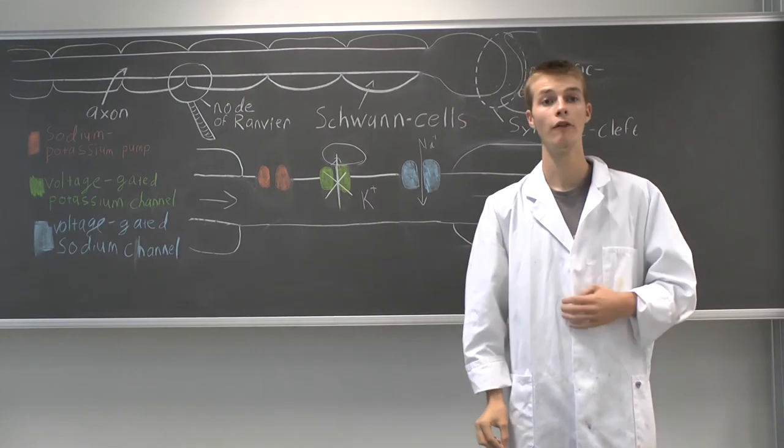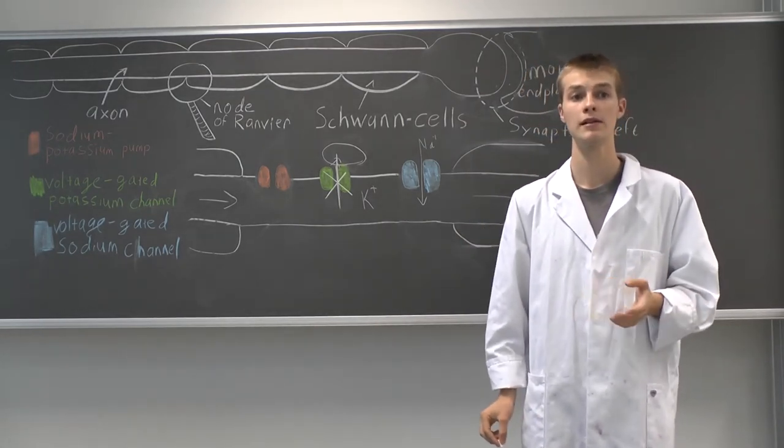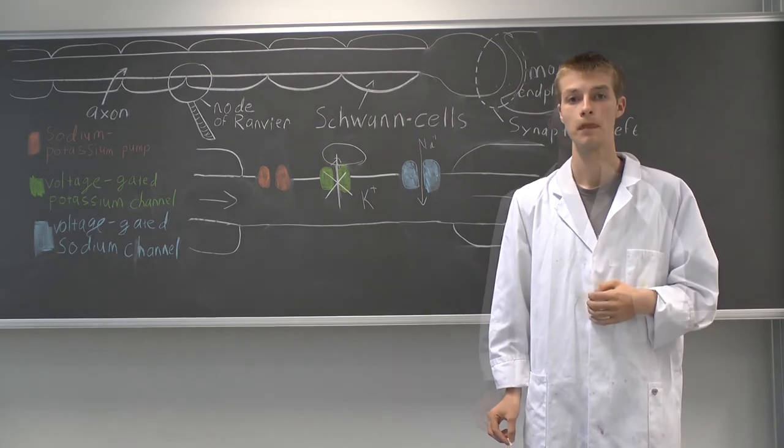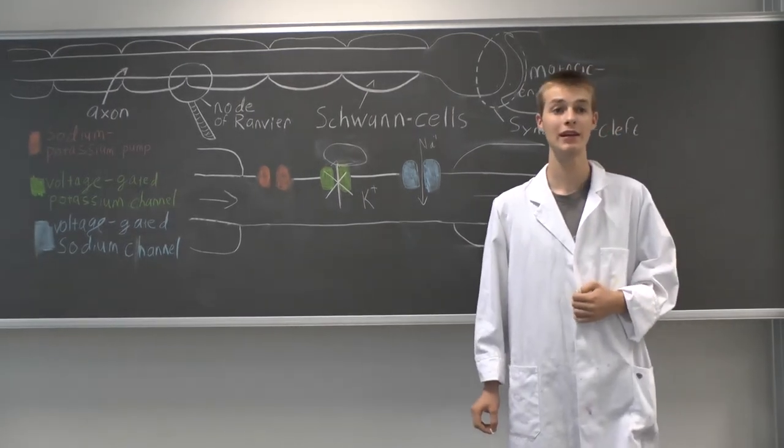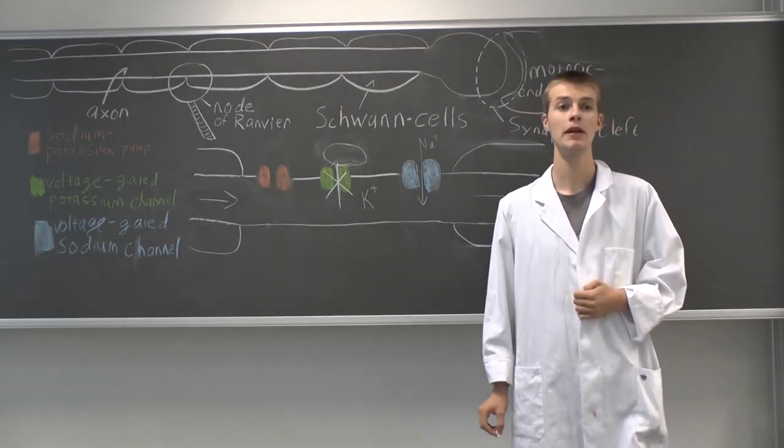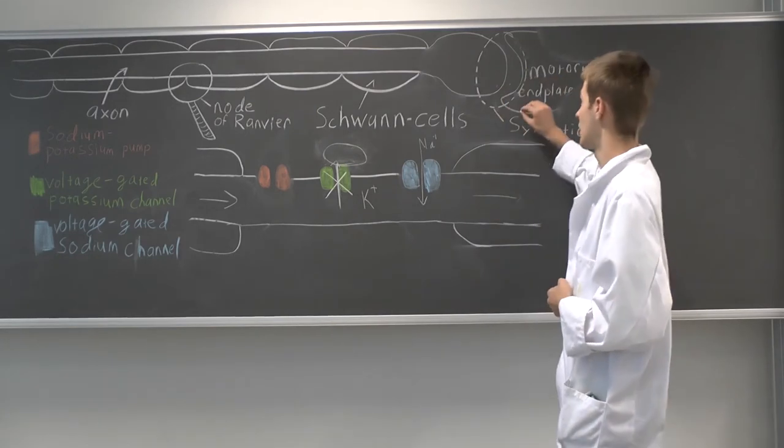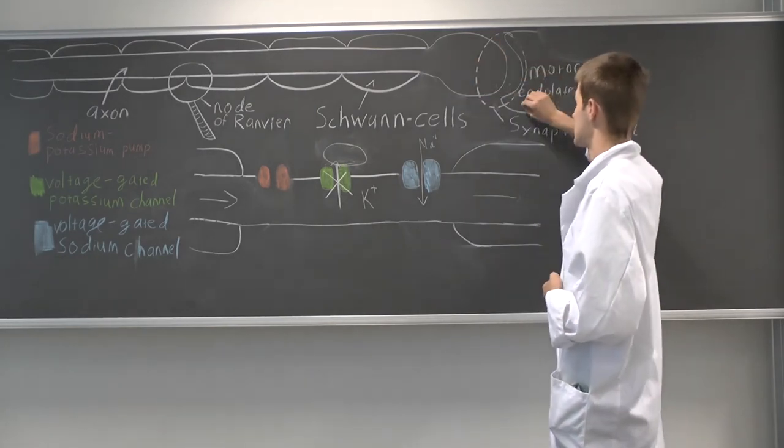The victim often suffocates because the diaphragm and the intercostal muscles don't work correctly. To help the victim we can theoretically give him a toxin with the opposite effect like atropine or botox which inhibit the signal. They act here at the synaptic cleft.